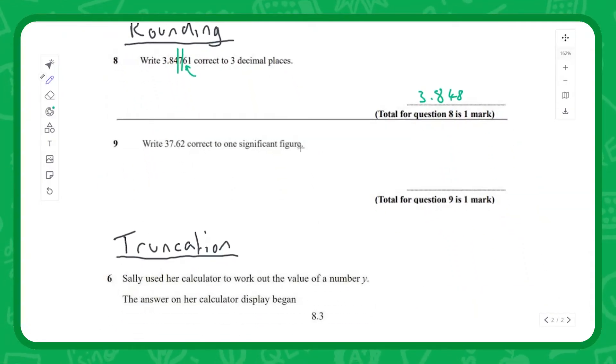We'll do one more - a significant figure version of rounding. To one significant figure, well one sig fig is just my very first digit, it's that 3 there. Again I look at the number right next to it - it's 5 and above, it's a 7, so I know I need to round that 3 up to a 4 and everything else I just ignore. Obviously that 3 is in my tenth column, it's actually a 30, so that 30 gets rounded up to a 40.